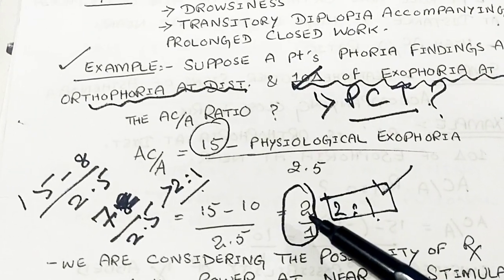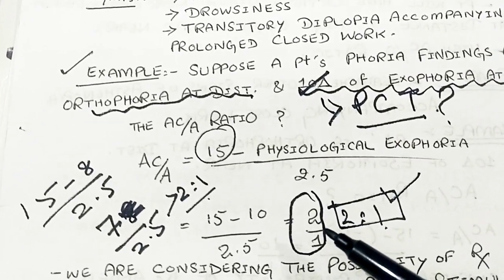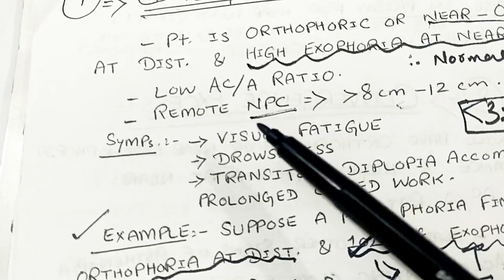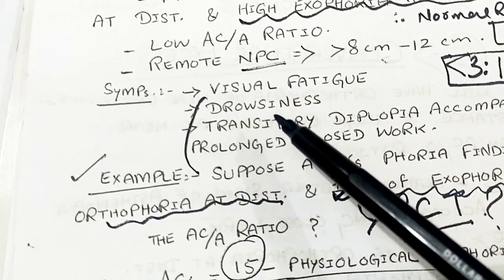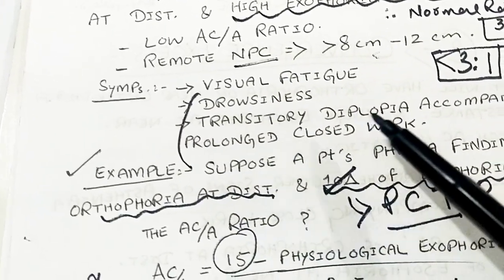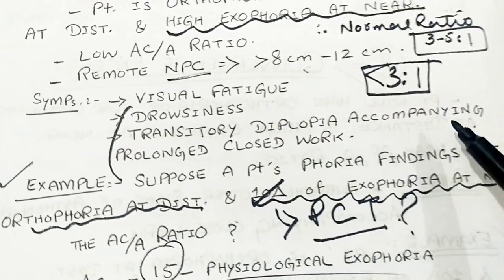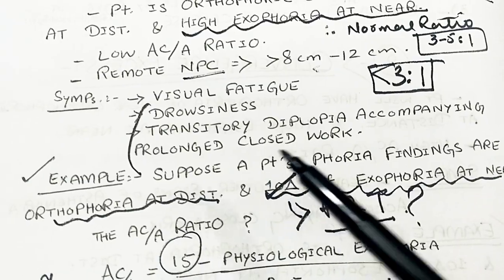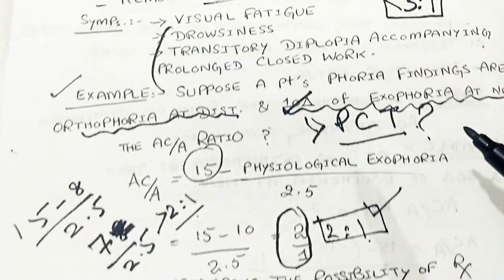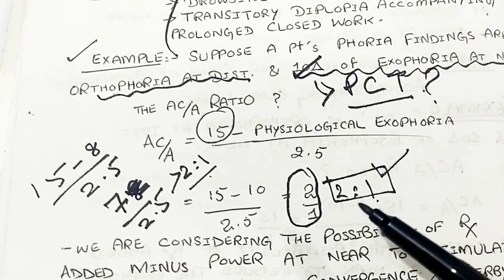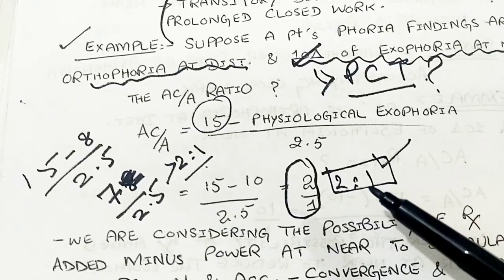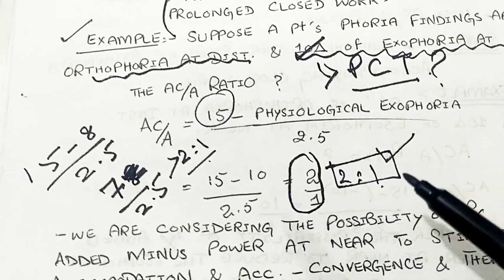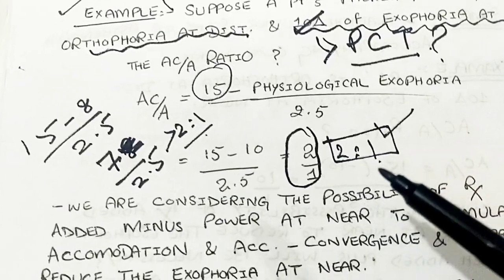So the patient has a low AC/A ratio and a remote near point of convergence, along with symptoms of visual fatigue, drowsiness, and transitory diplopia accompanying prolonged close work. Therefore, the patient is diagnosed with convergence insufficiency.